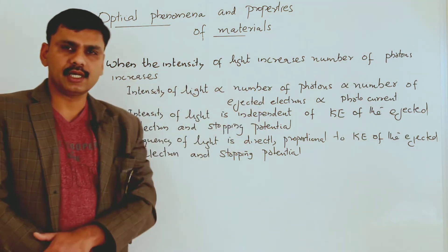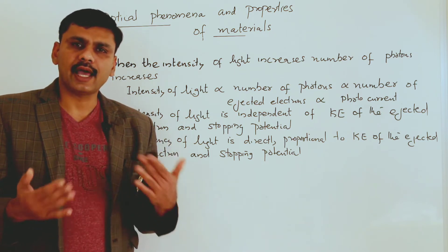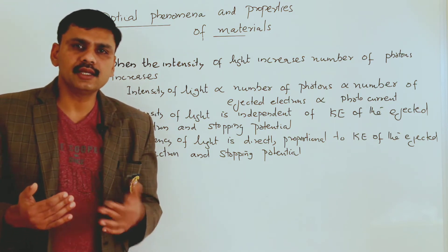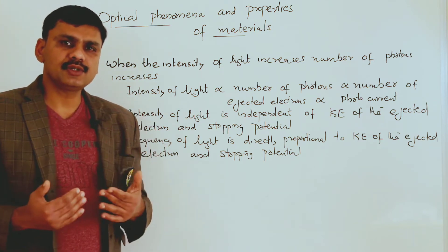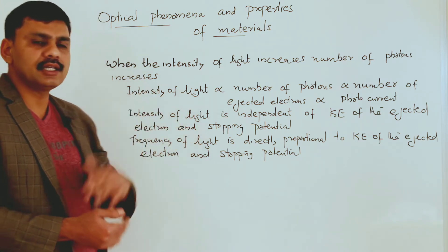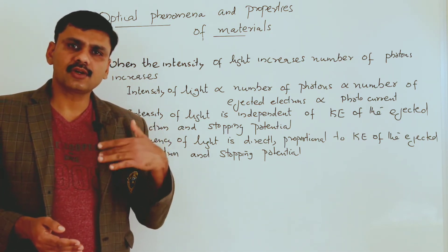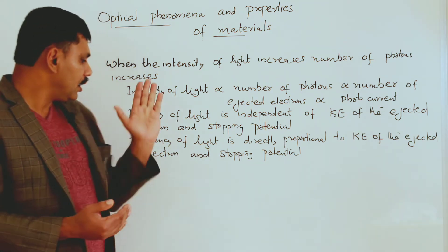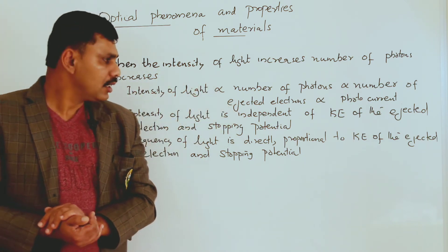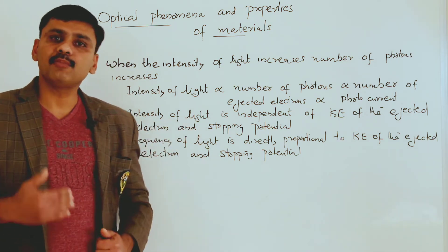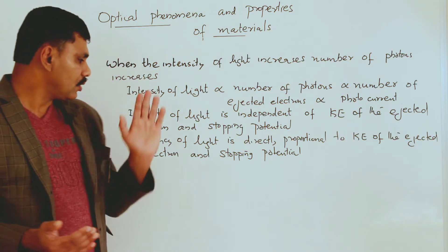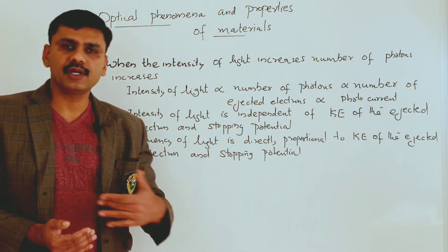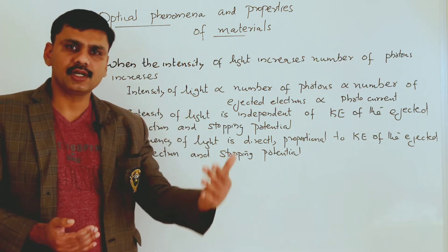Intensity of light is independent of the kinetic energy of the ejected electron and stopping potential. Increasing the intensity of light means increasing the number of photons only — we are not increasing the energy of each photon. So increasing intensity causes no change in the kinetic energy of ejected electrons. The kinetic energy changes only when more energetic photons fall on the metal surface.